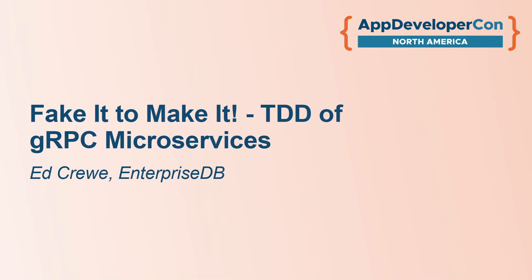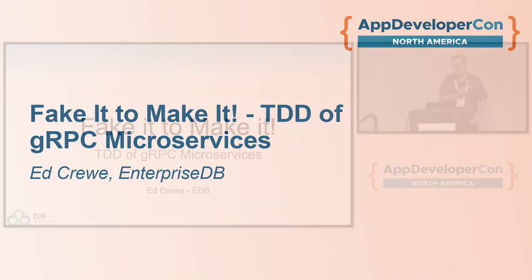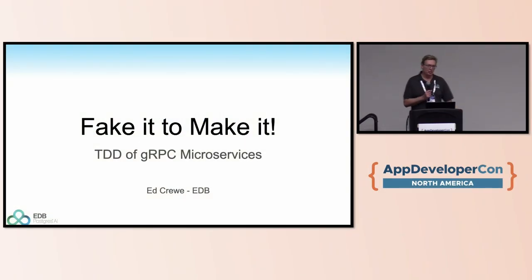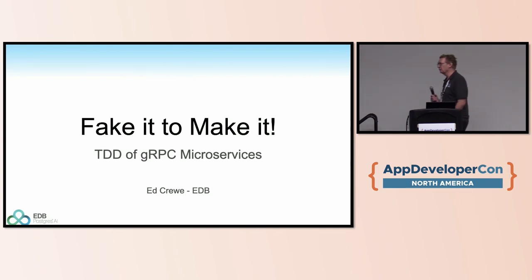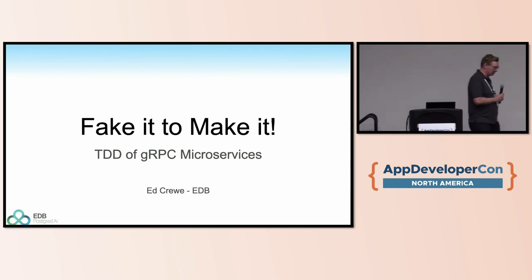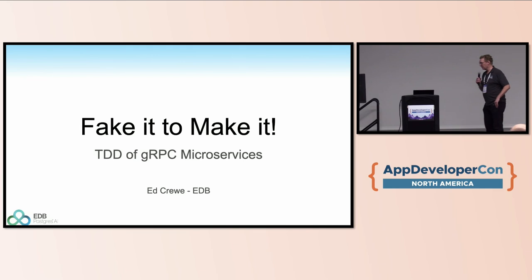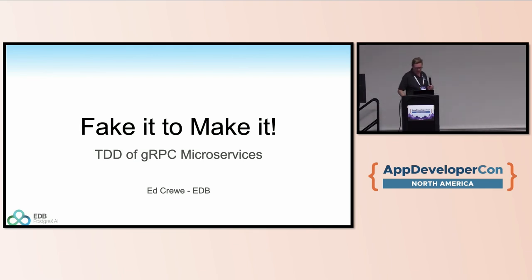Hi, my name is Ed Crewe, coming here from the UK, from Bristol. You might not have heard of Bristol — the last time we were internationally in the news was during the Black Lives Matter protests, where Bristolians decided to roll Edward Colston's statue into the docks. He was a prolific slaver, so it was time to dunk him in the docks.